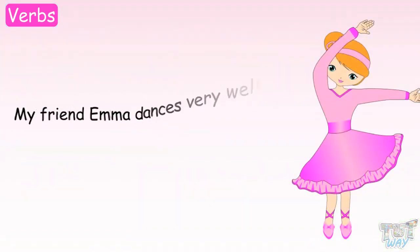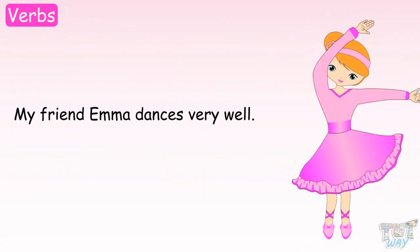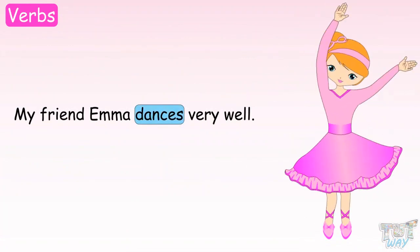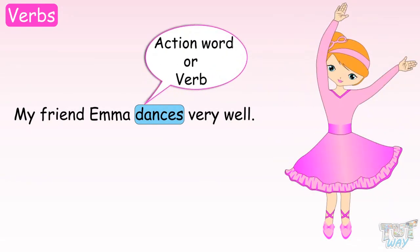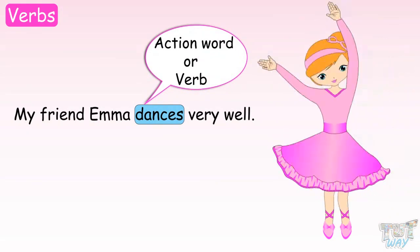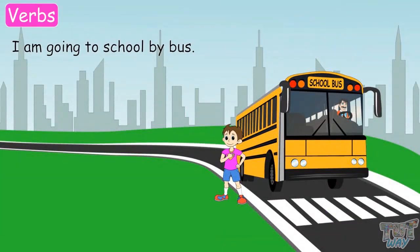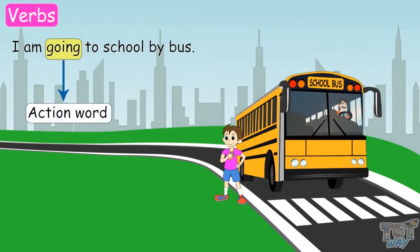My friend Emma dances very well. Here, the word dances tells about what Emma does, so the word dances is an action word or a verb. I am going to school by bus. Here, the word going tells what I am doing, so the word going is an action word or a verb.